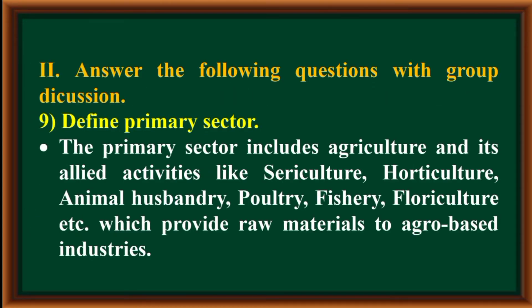Answer the following questions with group discussion. Define primary sector. The primary sector includes agriculture and its allied activities like sericulture, horticulture, animal husbandry, poultry, fishery, floriculture, etc., which provide raw materials to agro-based industries.